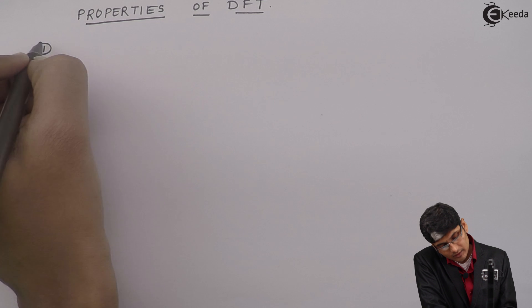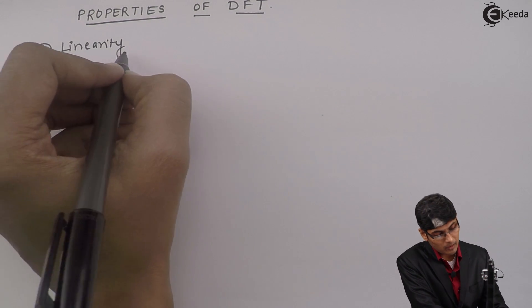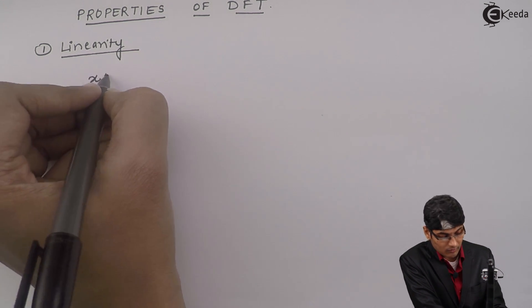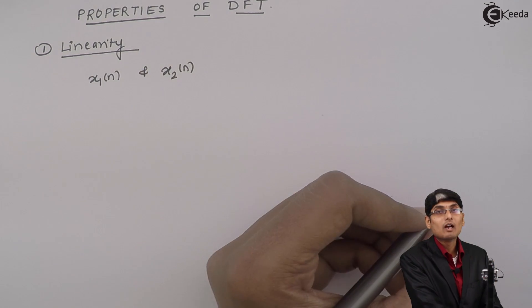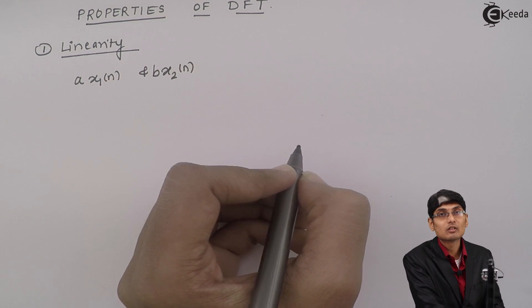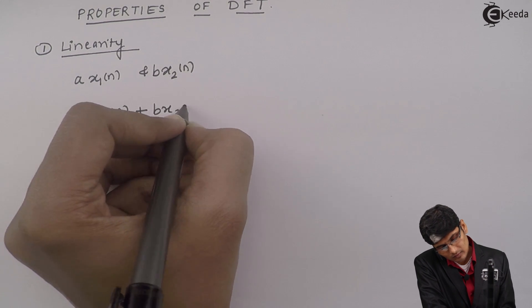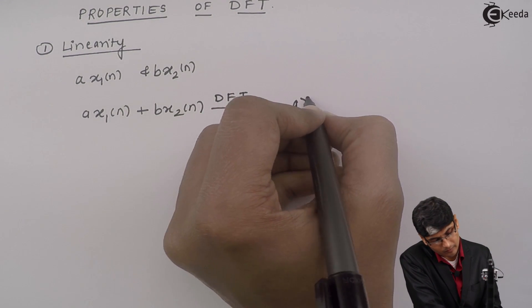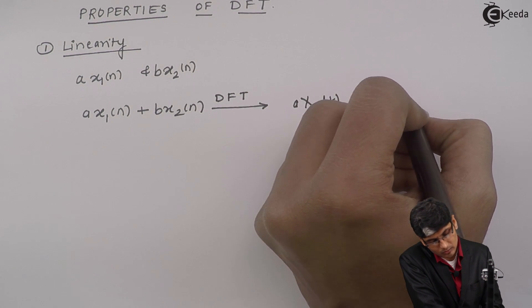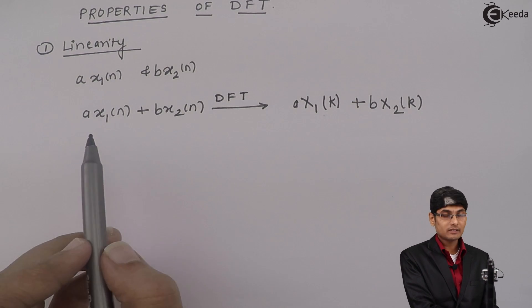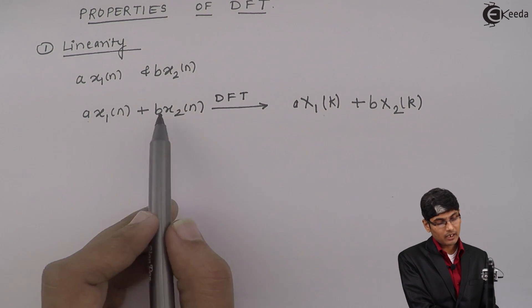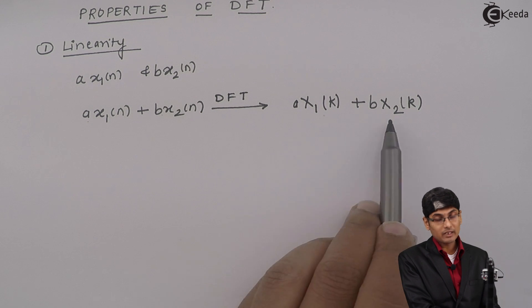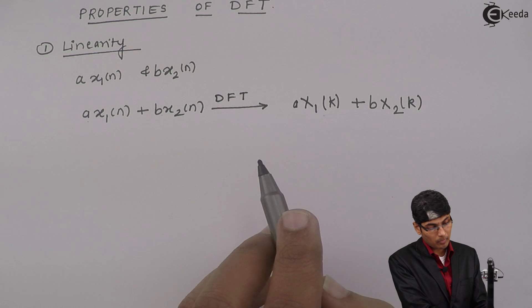The first DFT property is linearity. The linearity property says that if I have two functions x1(n) and x2(n), I scale them by constants a and b and add them together linearly, then the DFT will be a·X1(k) plus b·X2(k). So the DFT of x1 is X1(k), DFT of x2 is X2(k), and the constants are multiplied — that is the linearity property.